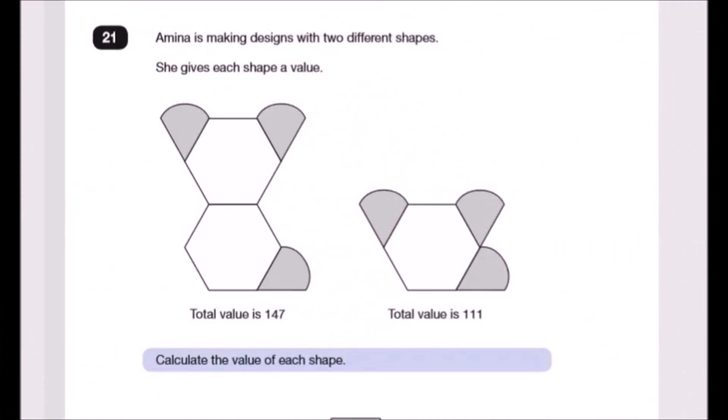Okay, number 21 guys, so close, we're almost done. Amina is making designs with two different shapes. She gives each shape a value. The first shape has a value of 147 and consists of two hexagons and three ice cream cones, while the other one has a total value of 111, which is one hexagon and three ice cream cones. Basically the same shape but one less hexagon.